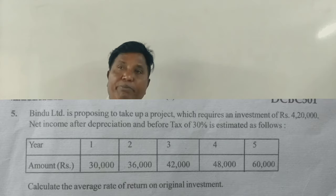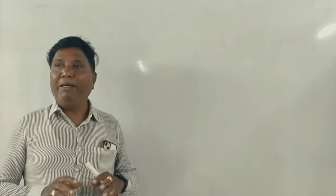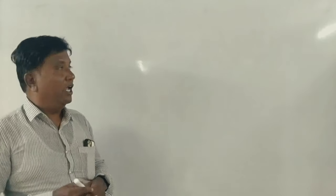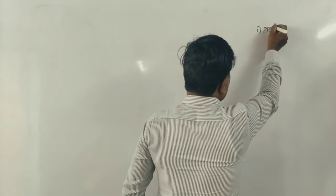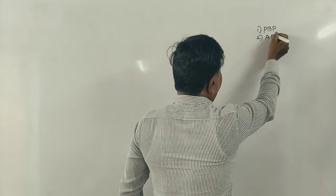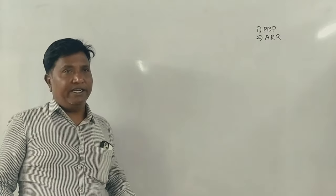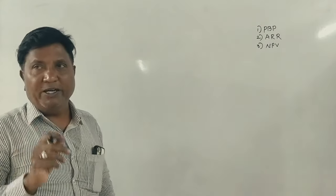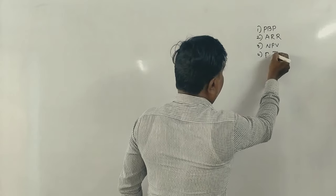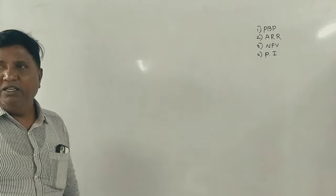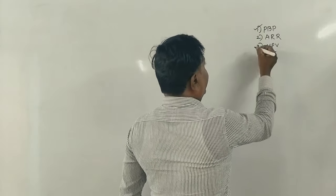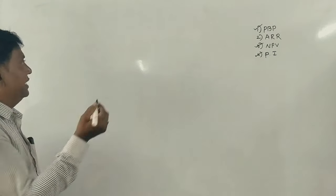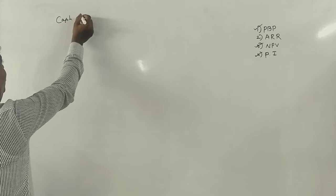Financial management 57 — capital budgeting. The methods covered are: payback period, average rate of return (accounting rate of return), NPV, and profitability index. What is important in the problem is that cash inflow is net cash inflow.